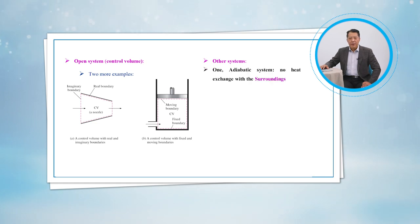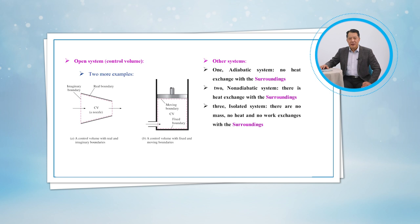1. Adiabatic systems have no heat exchange with the surroundings. 2. Non-adiabatic systems have heat exchange with the surroundings. 3. Isolated systems have no mass, no heat, and no work exchanges with the surroundings. 4. Non-isolated systems have mass or heat or work exchanged with the surroundings.